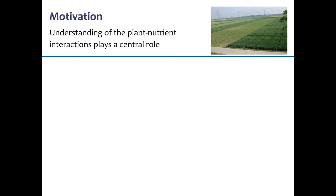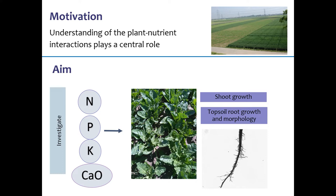The study aims to investigate the effects of nitrogen, phosphorus, potassium, and liming omission on sugar beet shoot growth, as well as topsoil root biomass growth and morphology, under field conditions using a long-term fertilizer experiment.